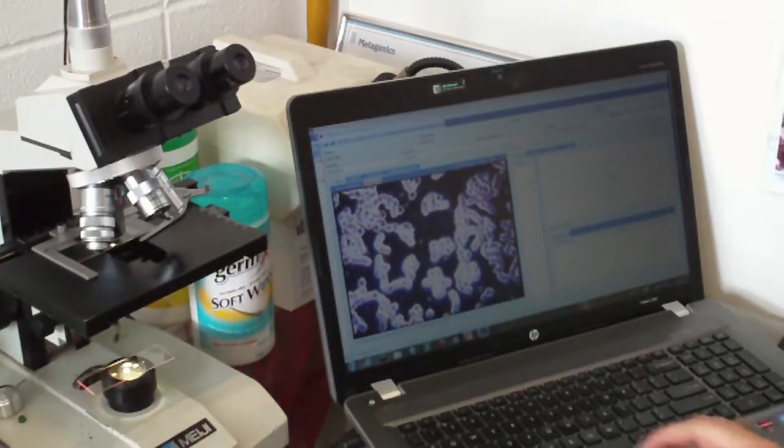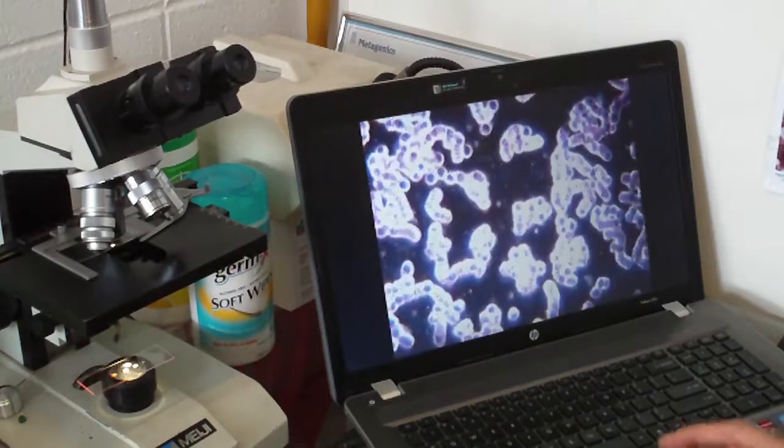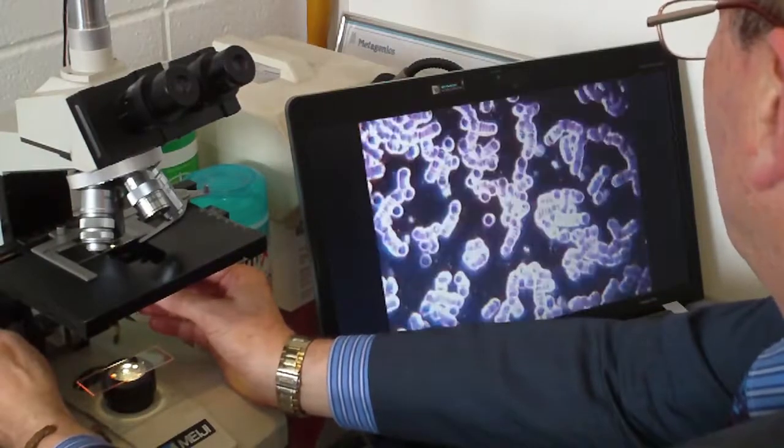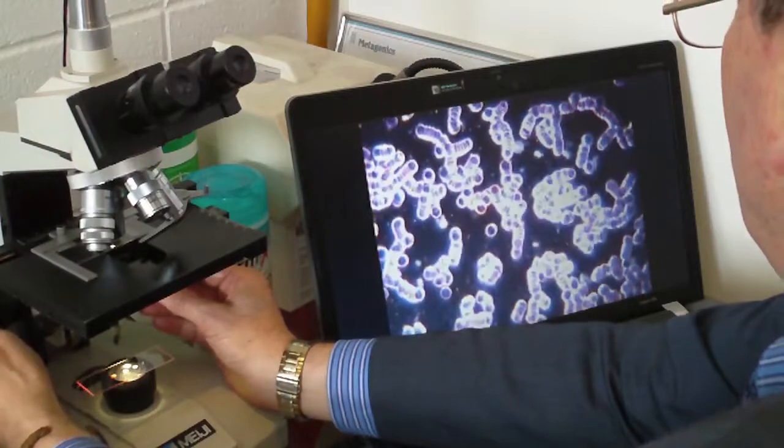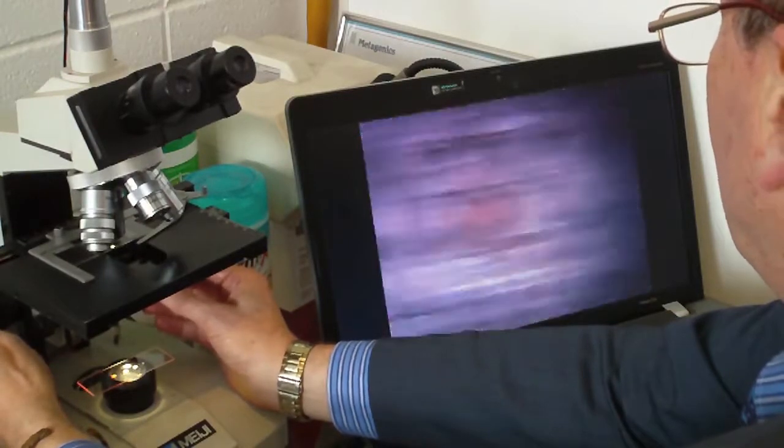Great. So if we have a look here, we can see on full screen, this is the patient's blood. Now, there is a little bit of clumping going on here called Rouleau. Rouleau is where the cells aren't completely separated.